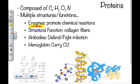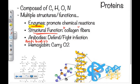Some proteins provide structural function — collagen fibers help provide support inside the human body. Hair, muscle fibers, tendons, and ligaments are largely composed of protein-based collagen fibers. Proteins also act as antibodies — protein-based structures that help defend against or fight infection inside your body. Hemoglobin is a protein found in your blood that carries oxygen gas to your cells to carry out special cellular processes.